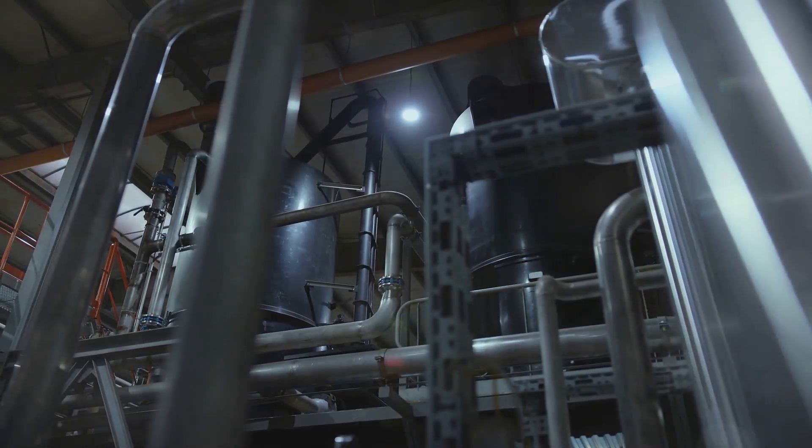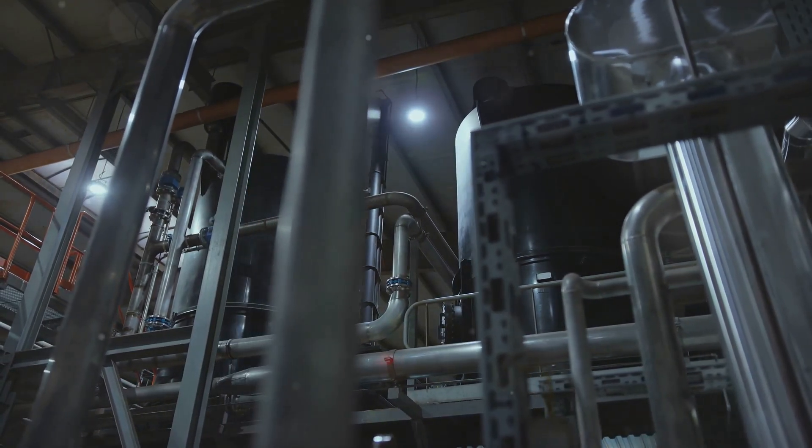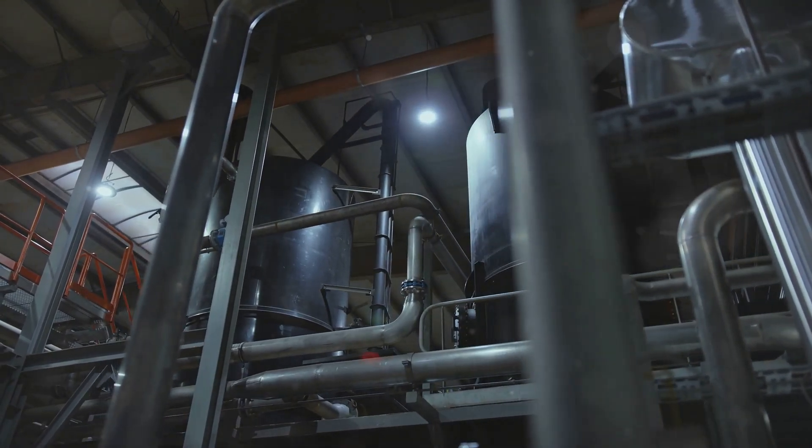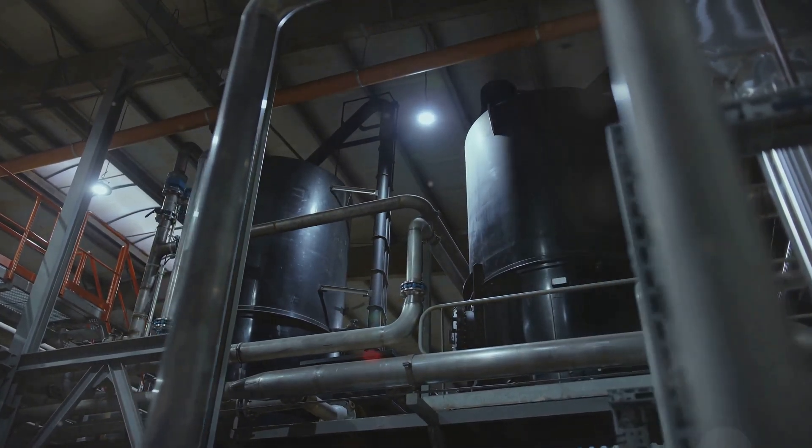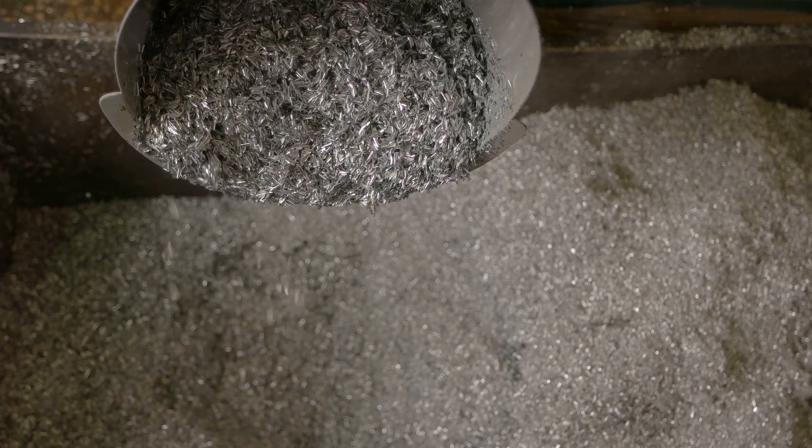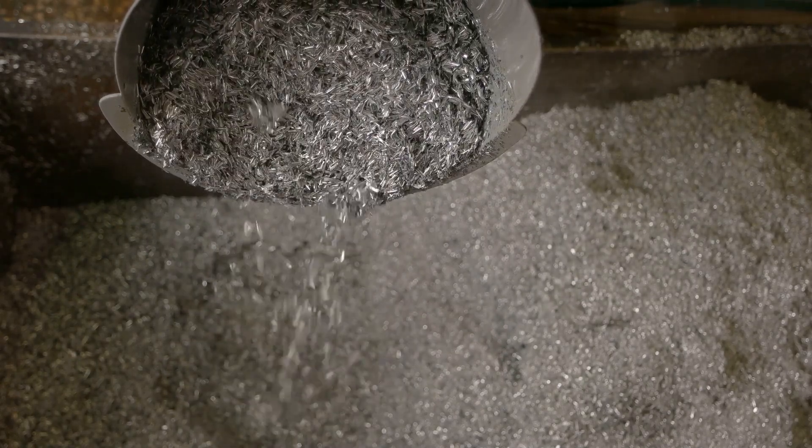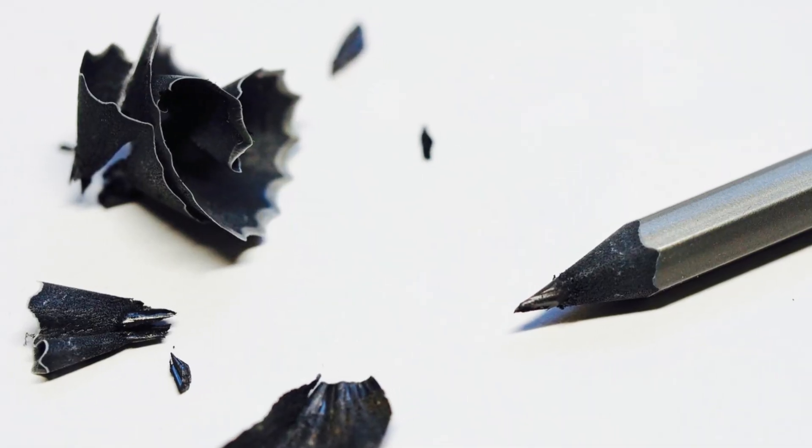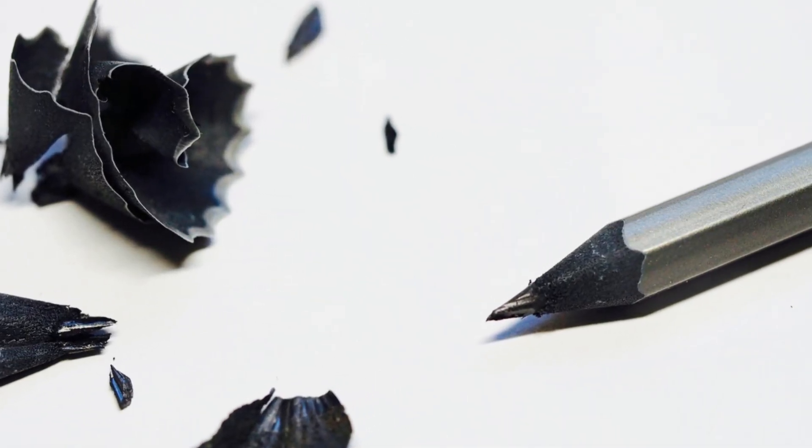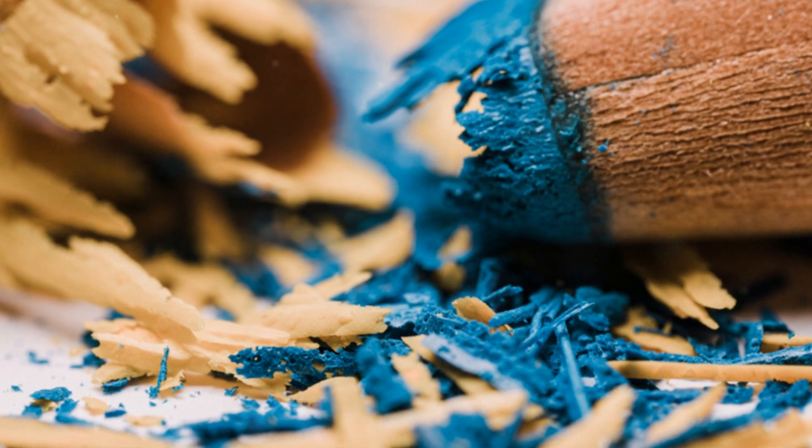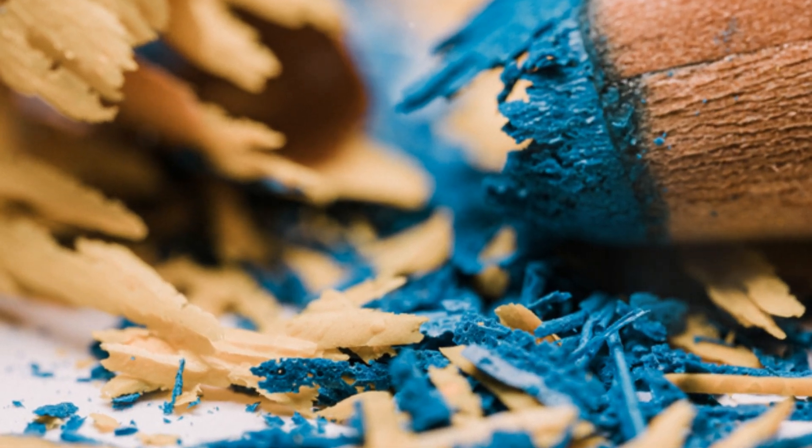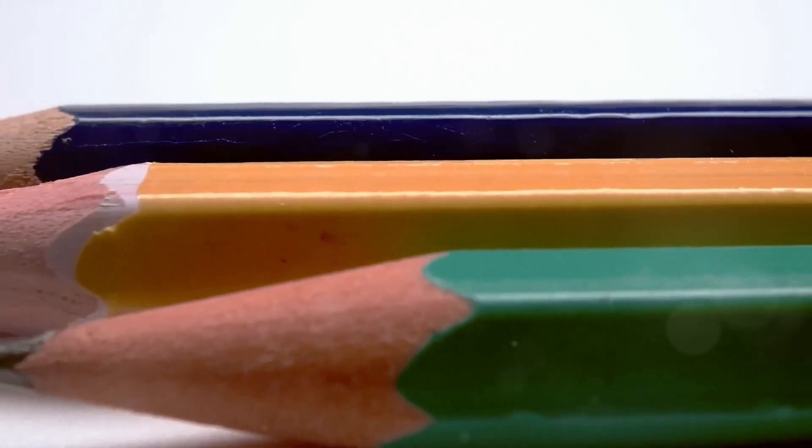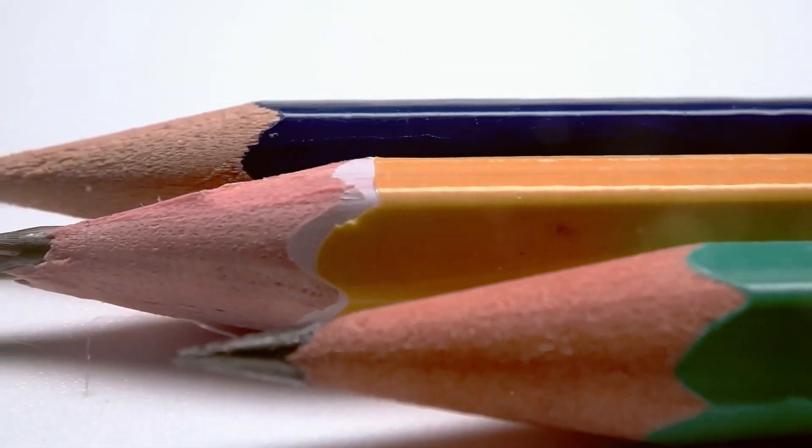Flotation, a process that exploits the differences in surface properties between graphite and impurities, is often used to further purify the graphite. This involves adding chemicals that cause the graphite particles to float to the surface, where they can be collected. The purified graphite is then dried and graded based on its particle size, purity and other characteristics. This grading system determines its suitability for various applications, including pencil making.